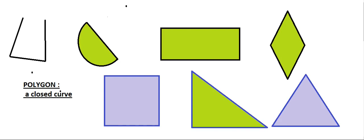In today's video, let us talk about polygons. Polygons are closed figures. There are two types of polygons: irregular and regular. First, let us see what a polygon is. This is not a polygon because it's not a closed figure — it is not closed from these points. This is also not a polygon because it has a curve.